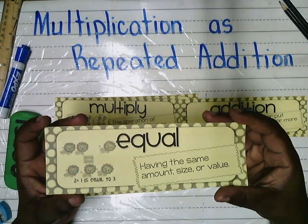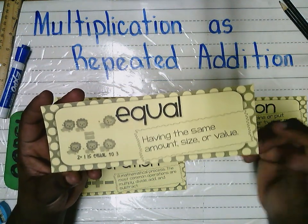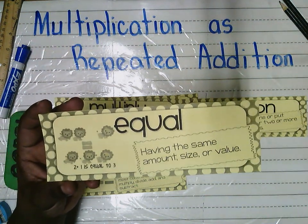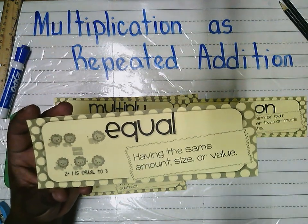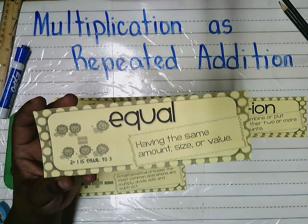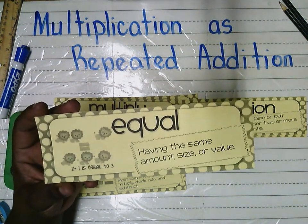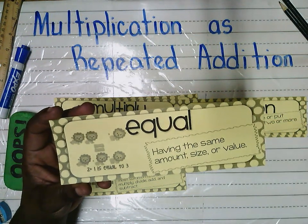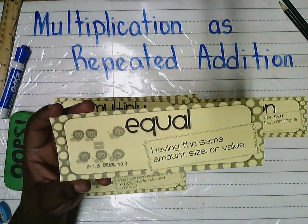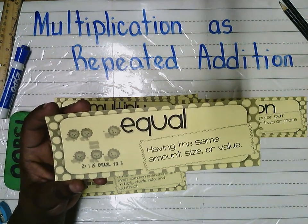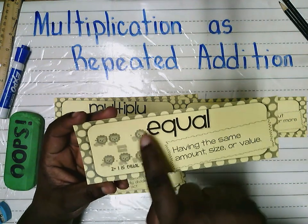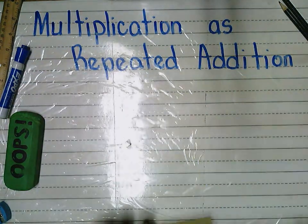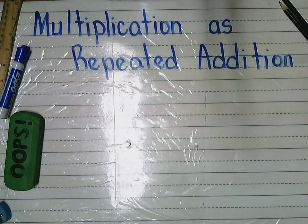Another word to remember is equal. Remember when we did fractions and looked at Lenae and Kalika — Lenae was fair because her tarts were equal, but Kalika's piece was bigger, so it was unequal. Equal means having the same amount, size, or value. Four quarters and a paper dollar are equal — they are both worth one dollar. Two plus one is the same as three, so they are equal.